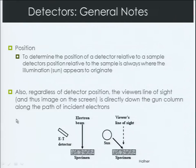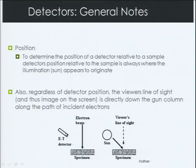A general note on detectors: to determine the position of a detector relative to a sample, if you're looking at your image and it appears to be lit from one side, that side from which it appears to be lit is the side where your out-of-lens detector is placed. That's a useful trick for figuring out the location of your detector relative to your sample image. Also, regardless of the detector position, the viewer's line of sight and therefore the image on the screen will be as if you were standing directly above the gun column and looking down the column along the path of incident electrons.